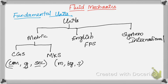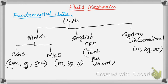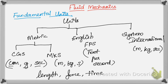CGS and MKS together are called the metric system. Next is the English system, which is FPS — foot, pound, second. Then there is the System International, which is also meter, kilogram, and second. These units are the standards of measurement of physical quantities like length, force, and time. In order to measure any physical quantity, we need some unit — a standard of measurement.